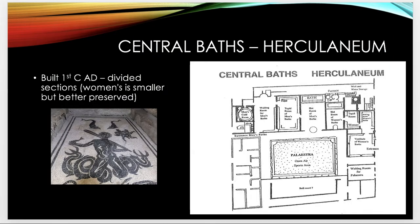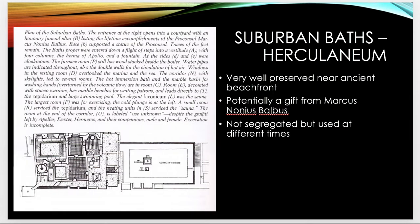For Herculaneum, the central baths have divided sections for women and men. The women's side features a beautiful marine-theme mosaic on the floor. There's also an open-air palestra and potentially a ball court. The suburban baths are very well preserved, located near what was then the beachfront — literally on the coastline. They were potentially a gift from Marcus Nonius Balbus. This bath is not segregated but smaller, so men and women went at different times.